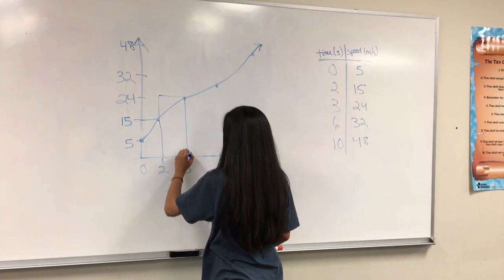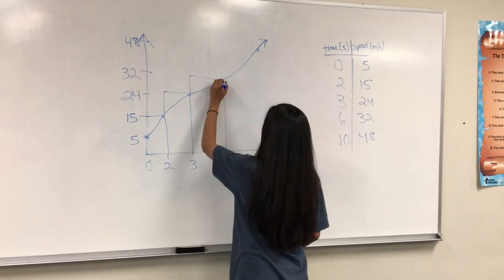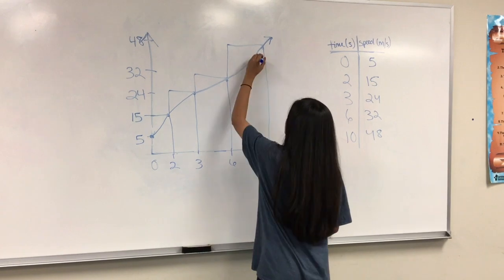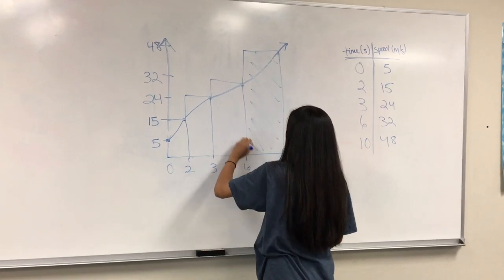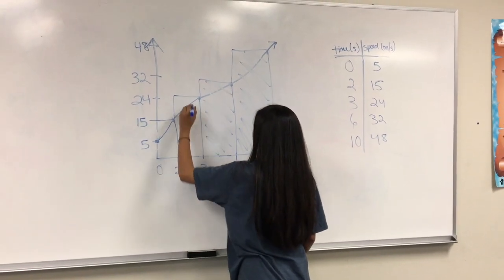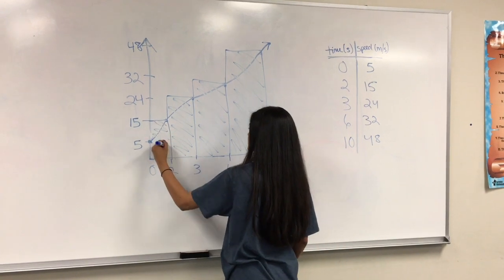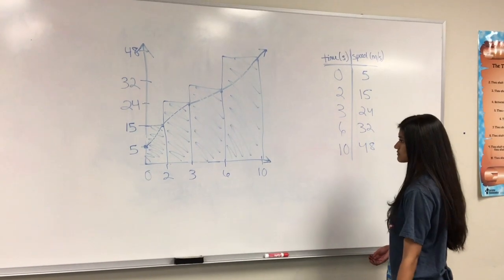Since this function is increasing, using RRAM will give us an over-approximation, since the rectangles go above the function. On the other hand, if the function was decreasing, the approximation would be an under-approximation, because the rectangles don't cover the entire area of the region below the curve.